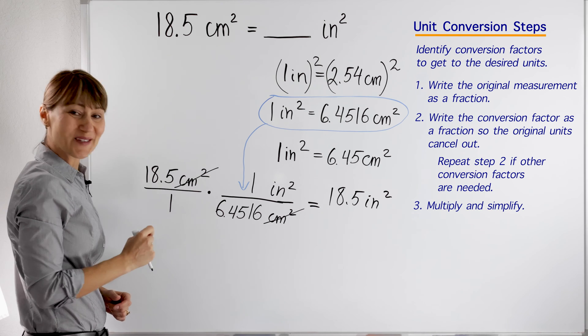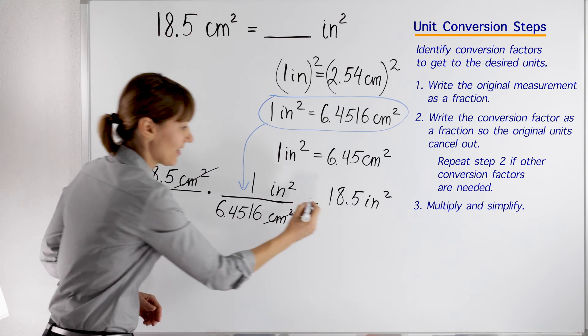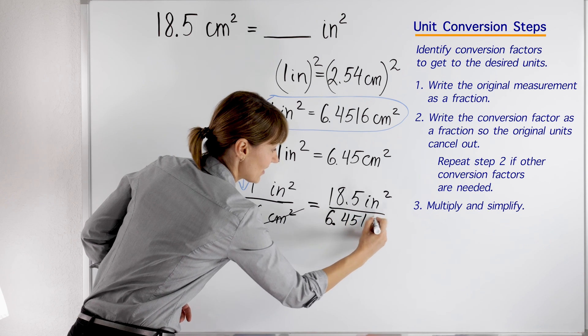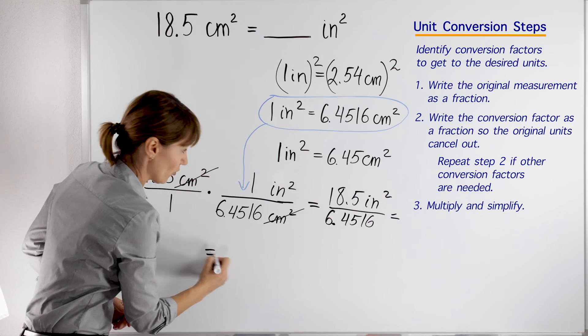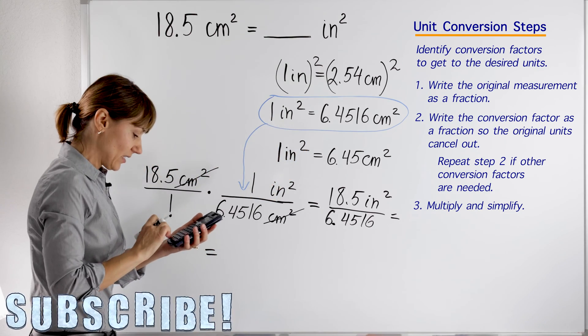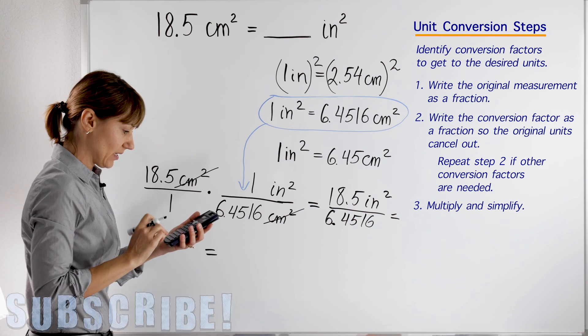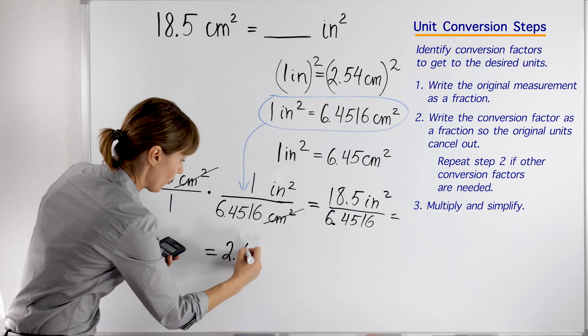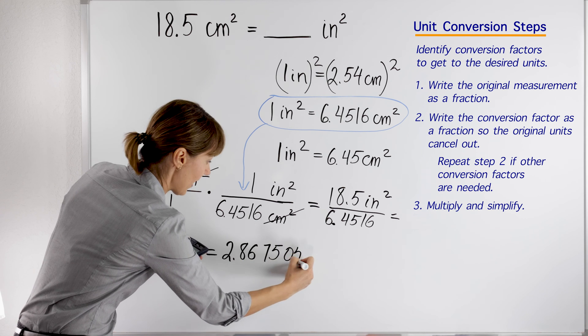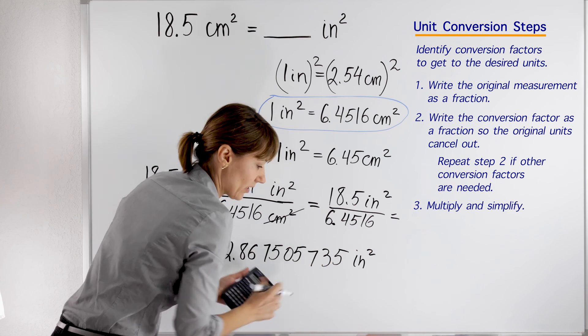In the denominator, what numbers do we have? 1 times 6.4516 will stay as 6.4516. What do we do? We just divide the numbers. Let's pick a calculator and divide: 18.5 divided by 6.4516. We'll have this long number: 2.867505735. We have inches squared, right?